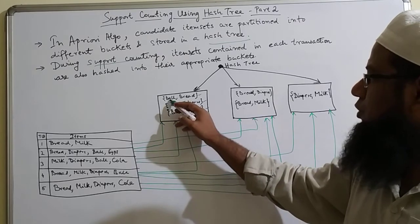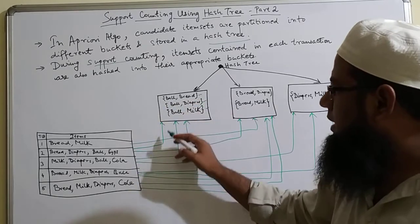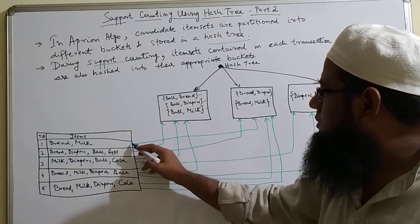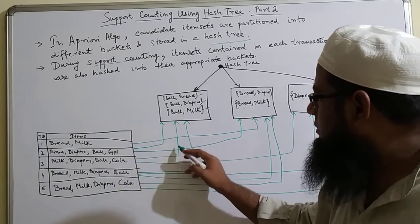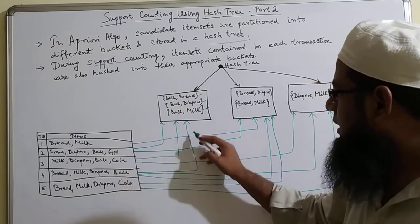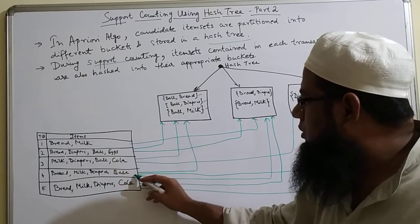For example, ball and bread is hashed with the second transaction, and then with the third one, and then with the fourth one.